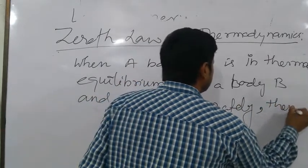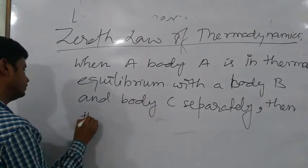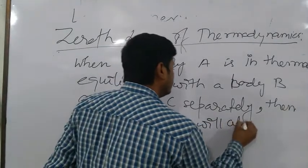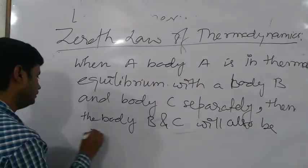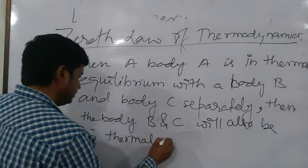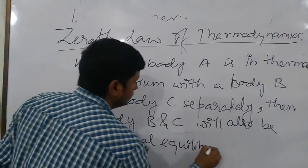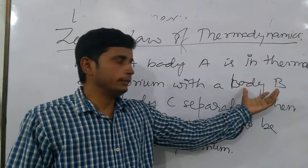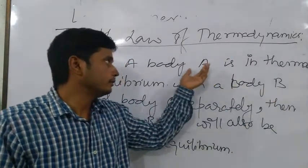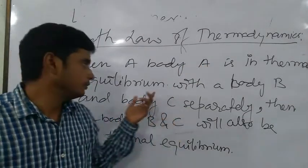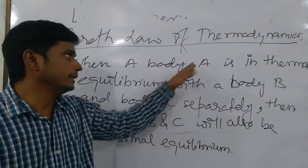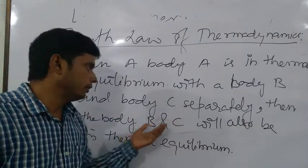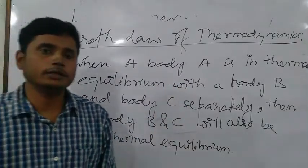then body B and C will also be in thermal equilibrium. This is the statement of the Zeroth law of thermodynamics. It means body A is in thermal equilibrium with body B, and body A is also in thermal equilibrium with body C — therefore body B and body C are also in thermal equilibrium.